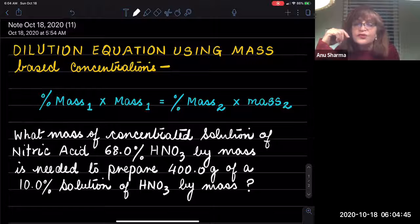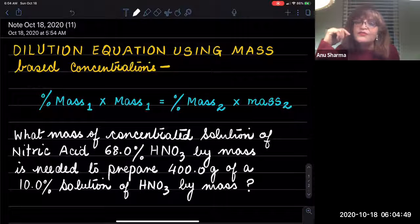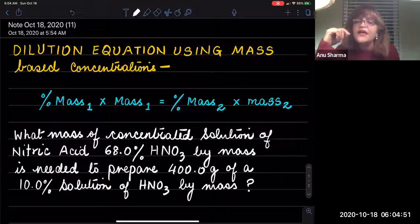So in this case, we are going to use the formula: percentage mass₁ times mass₁ equals percentage mass₂ times mass₂.